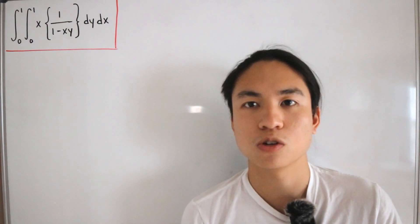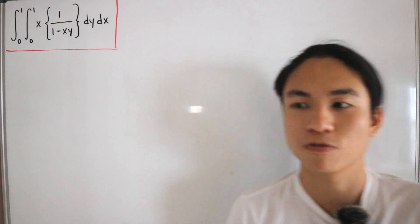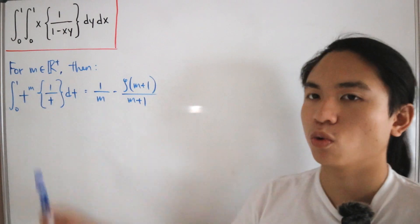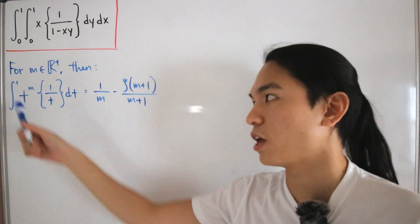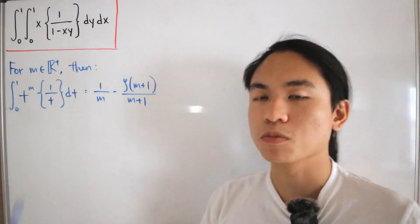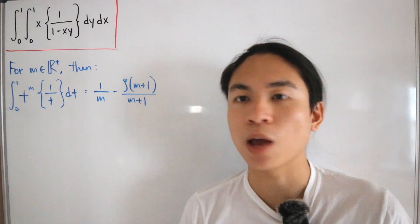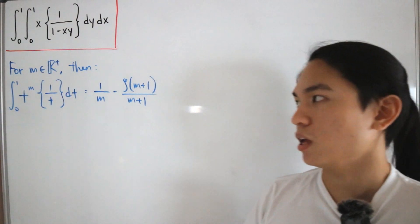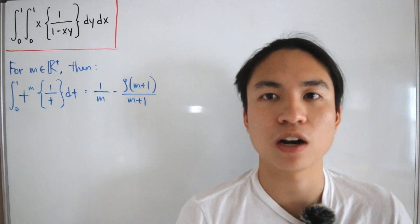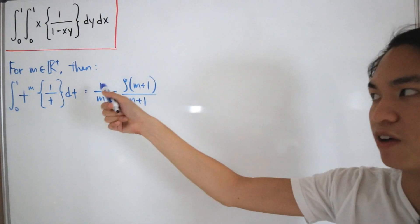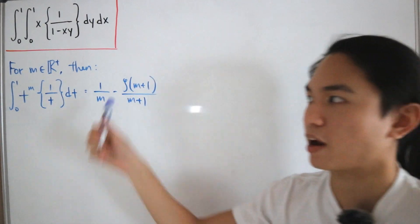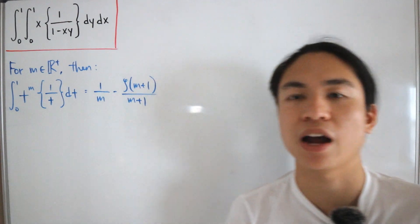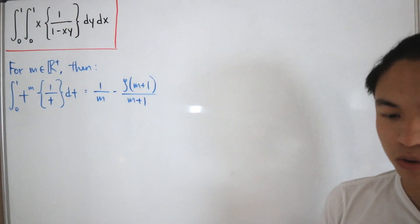Here is the definite integral we want to prove: the integral from 0 to 1 of t to the power m, where m is some positive real number, multiplied with the fractional part of 1 divided by t, dt, equals 1 divided by m minus the Riemann zeta function at (m+1) divided by (m+1).